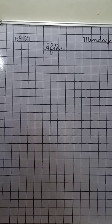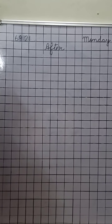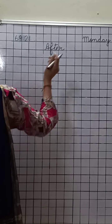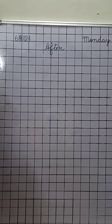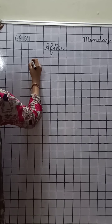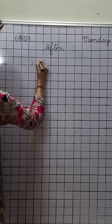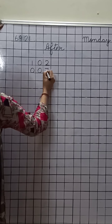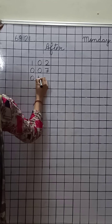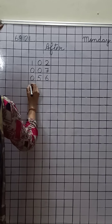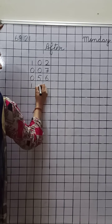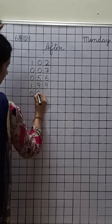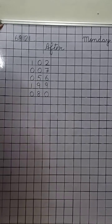Now write down the date, day, and write down the heading of after. After writing the heading, leave this whole line. Now let us start. Write down with me: one hundred two, only seven, fifty six, one hundred ninety nine. Then write down eighty.